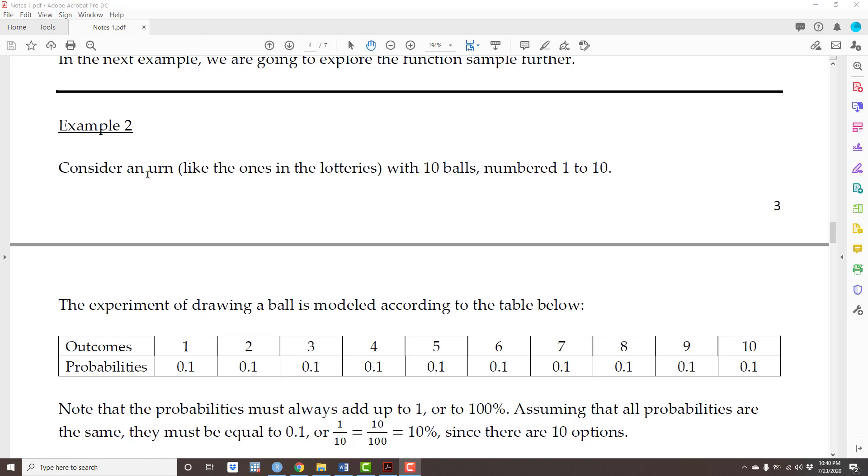Now, this example is that of an urn, like the urns we have in lotteries, and there are 10 balls in the urn. The balls are numbered from 1 to 10.